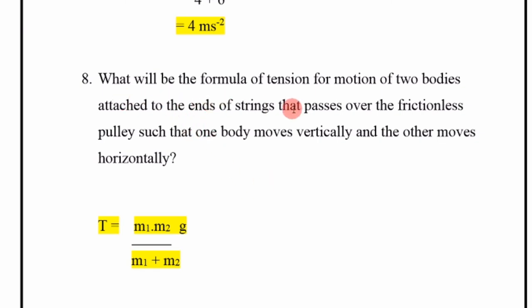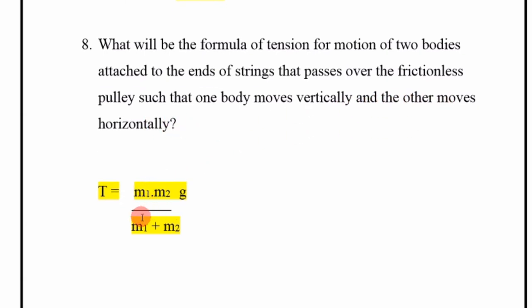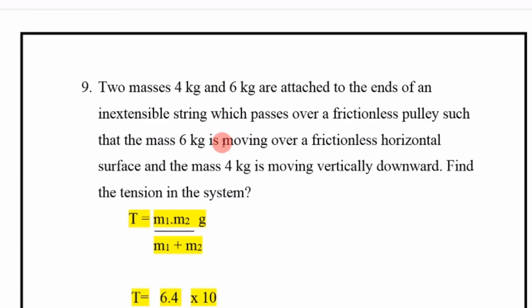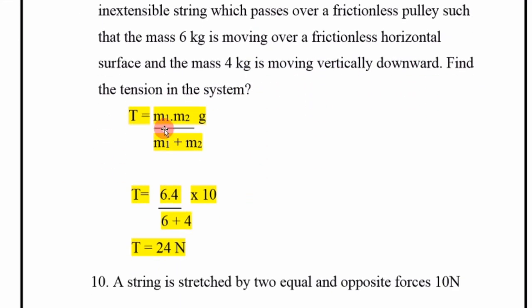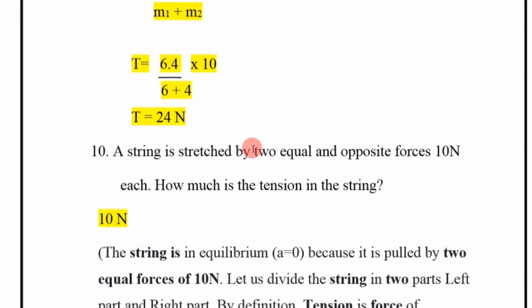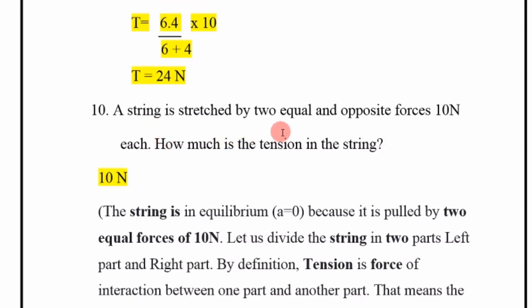What will be the formula of tension for motion of two bodies where one moves vertically and the other moves horizontally over a frictionless pulley? T = m1 × m2/(m1 + m2) × g. Numerical: Same setup — 4 kg and 6 kg masses. Putting the values, T = 24 Newton.